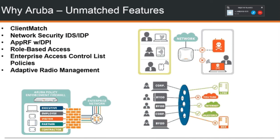ClientMatch is actually a sub-feature of Adaptive Radio Management. What that means for you is ease of configuration and end-user quality experience. Adaptive Radio Management will automatically detect all the access points and turn the power levels up and down across the network, and it will automatically adjust the channels they're on. Because if everyone's on the same channel, it causes interference and a bad end-user experience. So ARM ensures everyone has a great experience by adjusting power levels and channels accordingly, and ensures things like ClientMatch are enabled so APs are associated with the right clients.